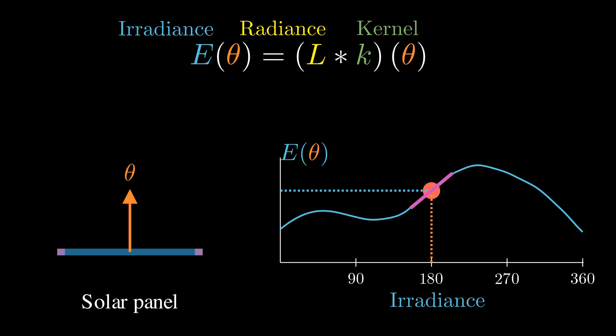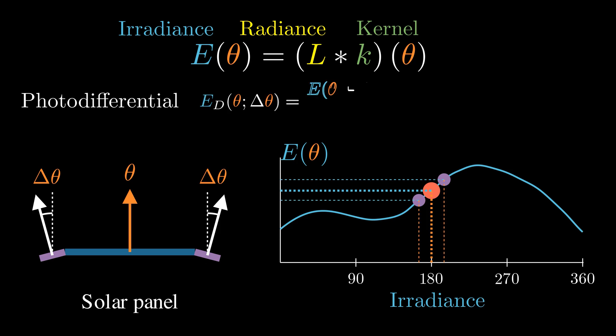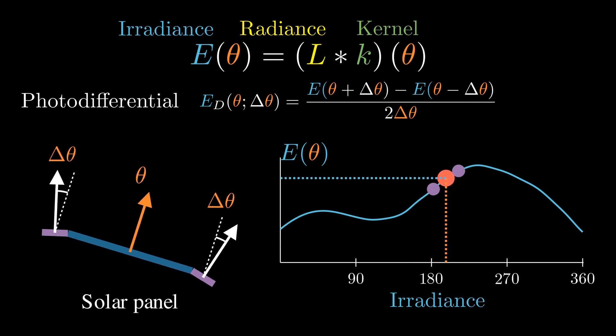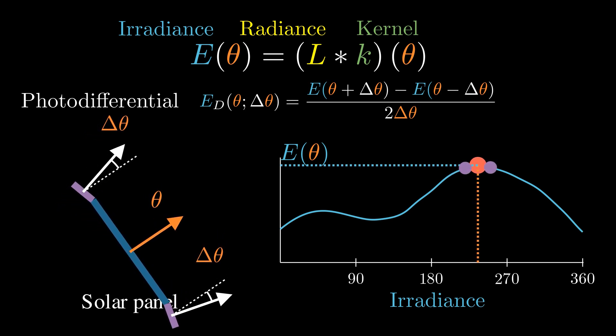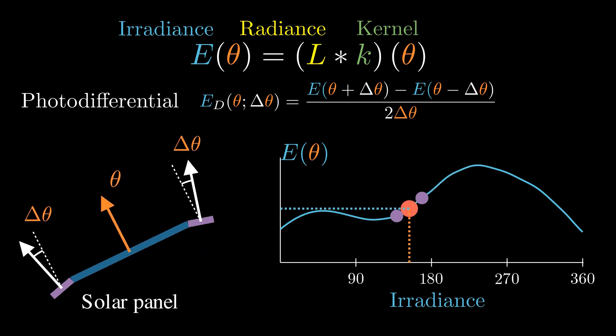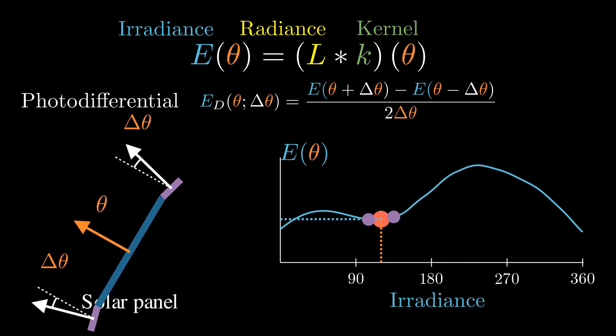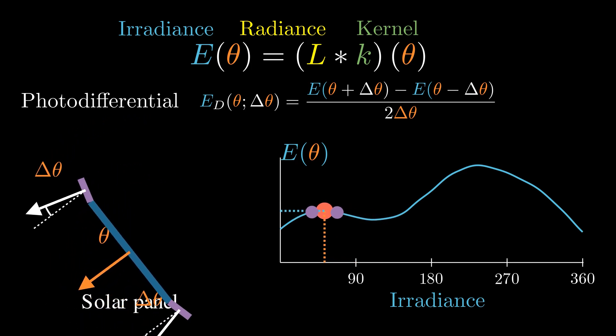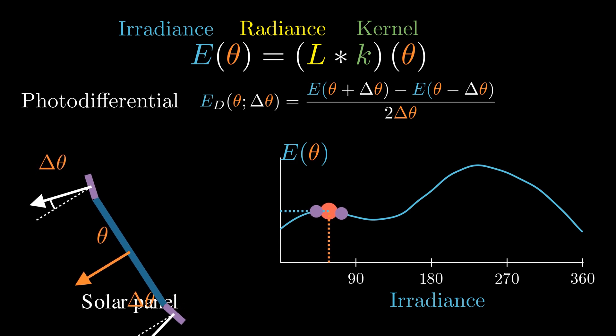But how do we get this gradient? One practical idea is to add photodetectors mounted slightly tilted relative to the solar panel. These detectors measure the irradiance from directions θ plus Δθ and θ minus Δθ. The difference between their readings is called the photodifferential. When the tilt angle Δθ is very small, the photodifferential provides a good approximation of the gradient of the irradiance function. With this information, we can iteratively tilt the panel in the direction of the gradient, effectively climbing toward the maximum irradiance. But even though the irradiance function is generally smooth, it often contains multiple local maxima. Without a good initialization, following the gradient alone can cause the panel to get stuck at suboptimal local maxima, far from the true best orientation.